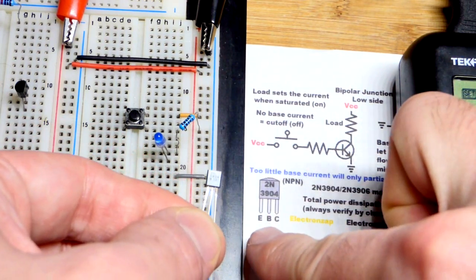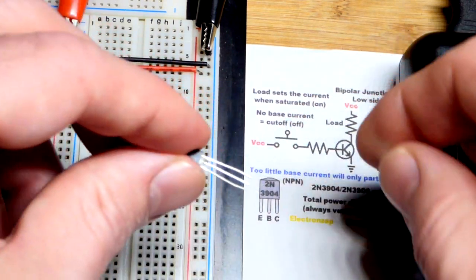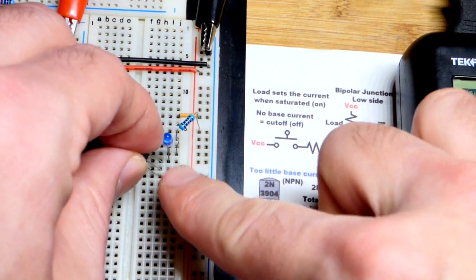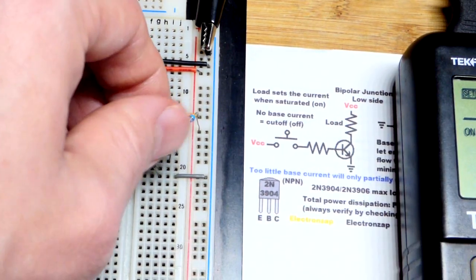We have a 2N3904 right here. I know the number won't show up. We got the pin layout: emitter to the left, base in the middle, collector to the right. We want the emitter to ground. If I swivel it this way, now the emitter is to ground. The base is in the middle, not connected to anything, and the collector is to the load.